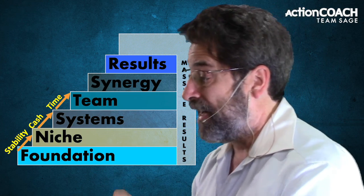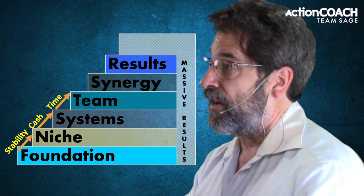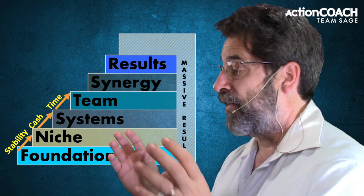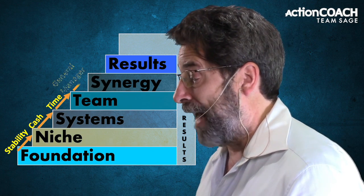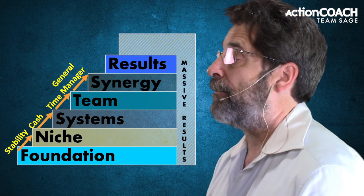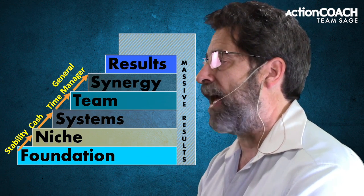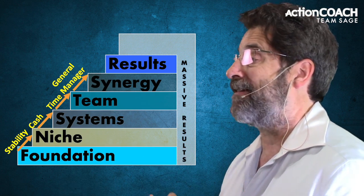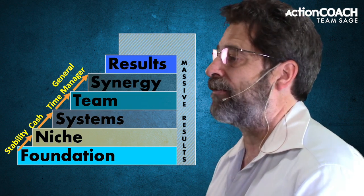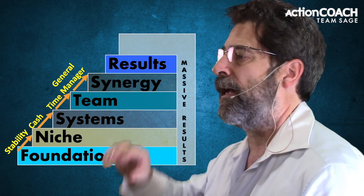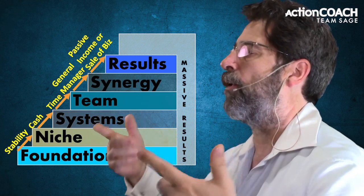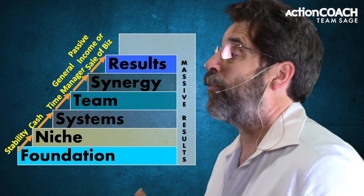The fourth step is team — making sure our team can run the business as well as we can, which brings in the structure for growth. Once that's in place, we can bring in team leaders or a general manager so we don't have to be there all the time. That brings us to the fifth step: synergy, where we can step back, turn up the volume, clean up any cracks in the foundation, and make sure marketing, systems, and team are all working perfectly. Which automatically takes us to the sixth step: results — where we get a business that truly runs without us, giving us the time, money, and freedom we went into business for.